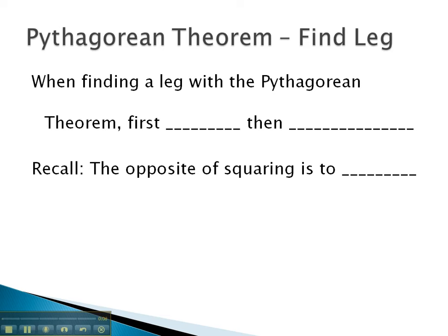When finding a leg with the Pythagorean Theorem, it's important that we first simplify, then isolate the squared variable. I'll write x squared, but it could be either a squared or b squared. Once we have x squared alone, it's important that we recall that the opposite of squaring something is to square root. A root is the opposite of an exponent.